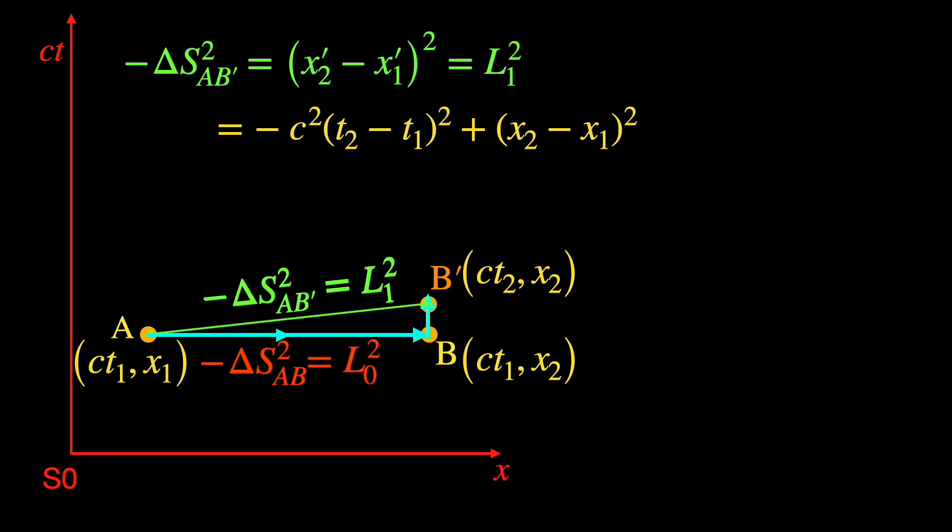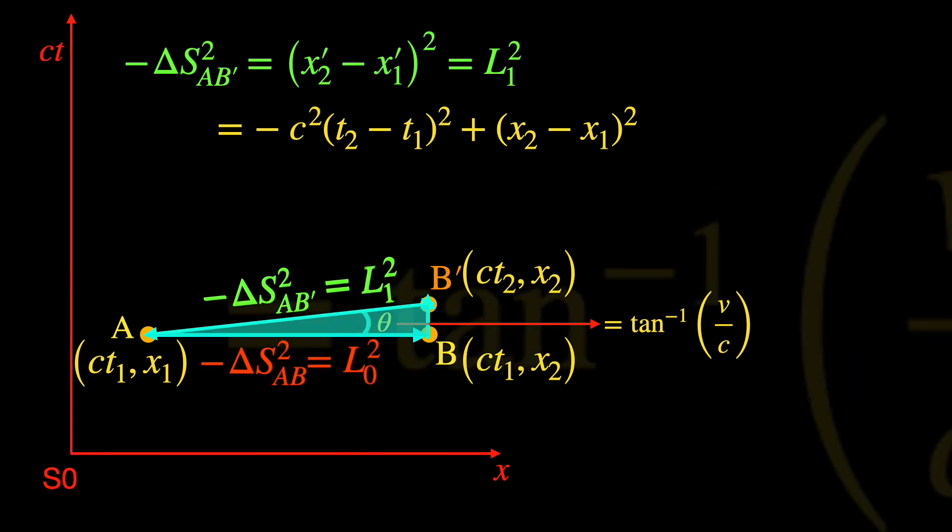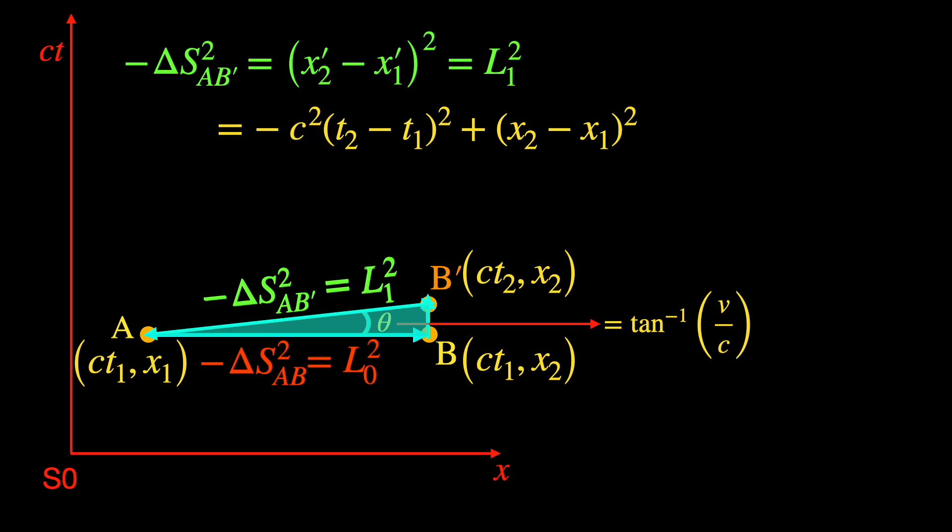Since the lines AB and AB' are parallel to the space axis of S0 and S1 frame respectively, the angle between the two is tan⁻¹(v/c), this we have explained earlier. Referring to the right angle triangle ABB' with base length (x₂-x₁) or L₀ and base angle θ which is just tan⁻¹(v/c), we have the height divided by the base, that is c(t₂-t₁) divided by (x₂-x₁) equals tan θ or v/c. Thus the temporal part is (v/c) times (x₂-x₁) or (v/c) times L₀.